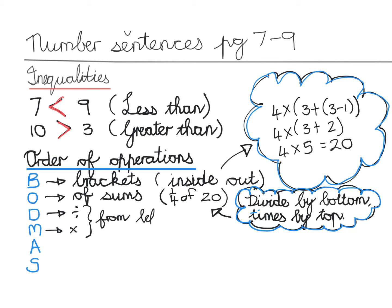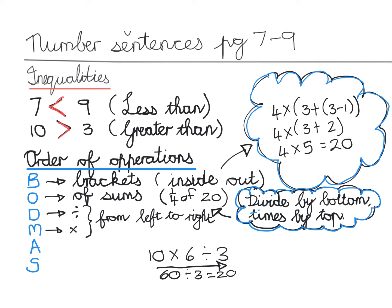What 'left to right' means: if I give you 10 times 6 divide by 3, you don't have to do 6 divide by 3 first. You can just work from left to right, because times and divide are equally important — they're brothers or sisters. The divide appears before multiply in the rule but is not more important; they go together. So: 10 times 6 is 60, and 60 divide by 3 is 20.